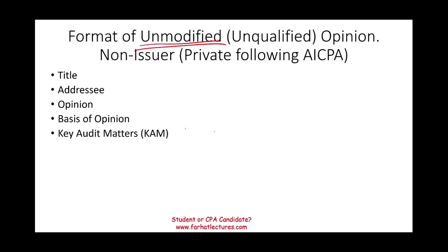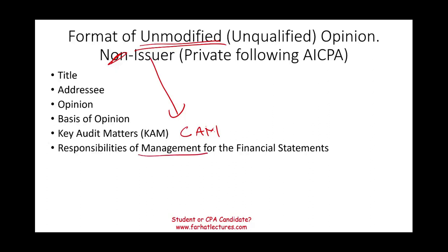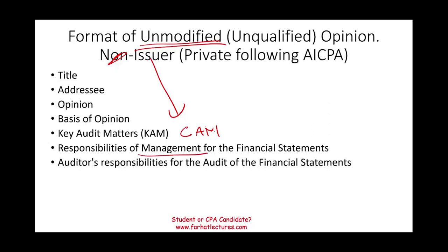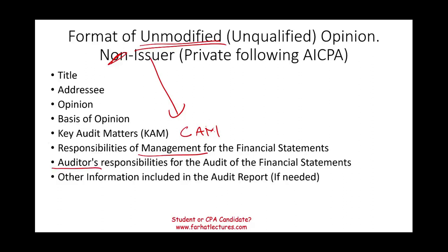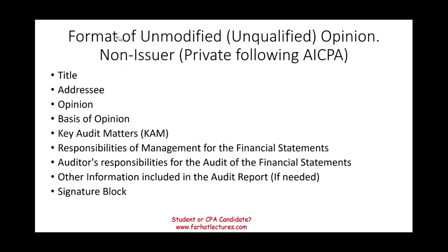For an issuer, we have critical audit matters (CAM). For private companies, we call them key audit matters (KAM). We'll also have paragraphs about management's responsibility, the auditor's responsibility, other information included in the report if needed, and a signature block. Once I have a list, I'll cover each item separately, starting with the title.